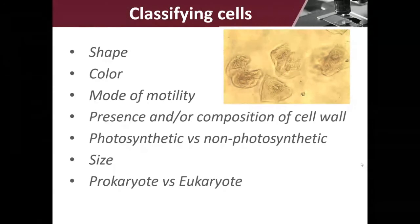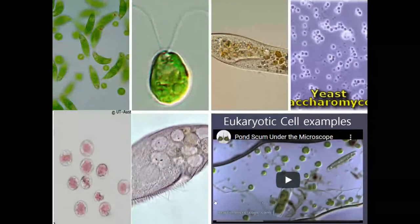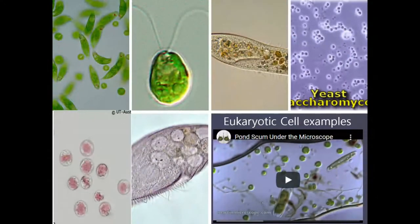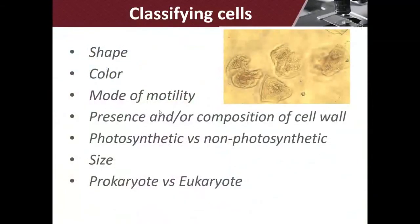If it's green, we can make the assumption it does photosynthesis — we don't know for sure. If it's not green, we can make the assumption that it likely doesn't do photosynthesis, and so we would have to test further to be sure. How it moves — some cells have little hair-like structures called cilia that help them move. Other cells have real long tails called flagella. Some cells don't have any tails at all and they just blob around, like an amoeba. So the mode of motility can help us distinguish what kind of cell to classify it as.